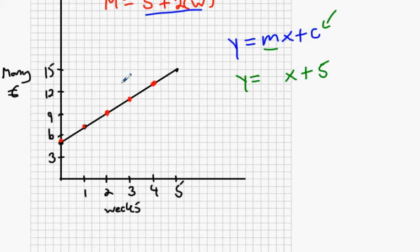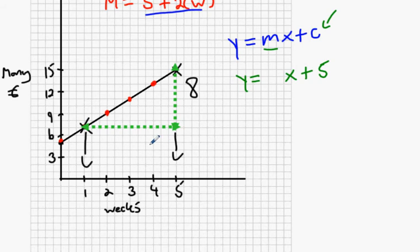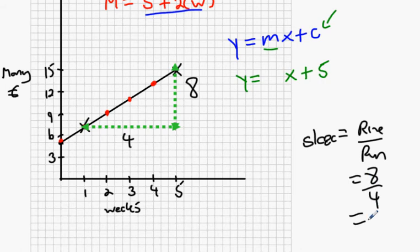m is the slope. How do you get slope? Rise over run — pick any two points on the graph. Choose this one and this one. To get the slope: how much did you go up? You started at seven and ended at fifteen — the gap between fifteen and seven is eight. You started at one on the x-axis and ended at five — the gap is four. Eight divided by four — slope equals rise over run.